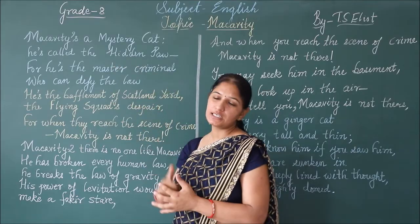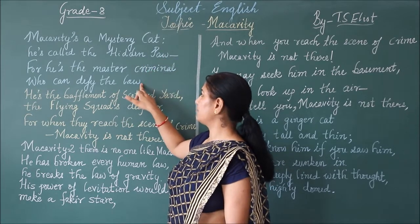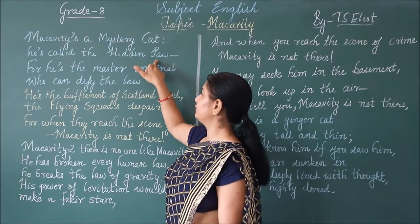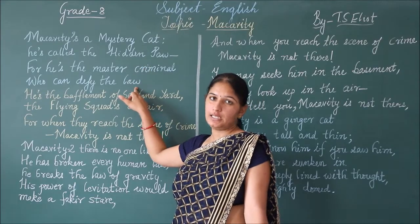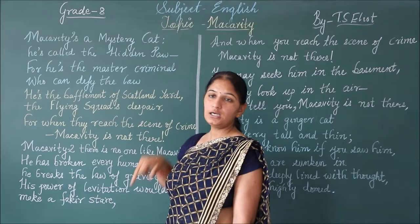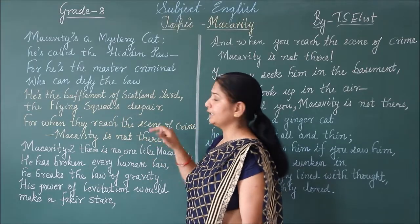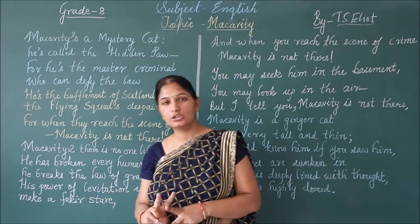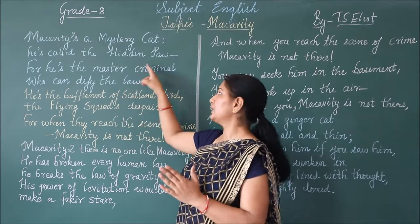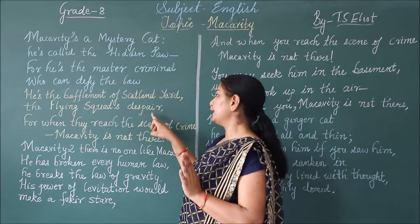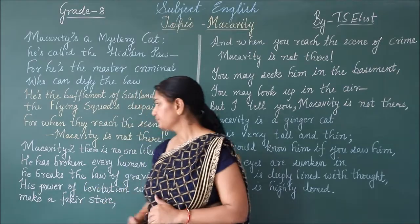Let us find out the rhyming scheme of the first paragraph. At the end of the first line it is 'paw,' and paw is rhyming with 'law' at the end of the second line. Then 'despair' and 'there' are the rhyming words for the third and fourth lines. If we take paw as A, then law is also A. Despair and there become B and B. So the rhyming scheme comes out as AABB.